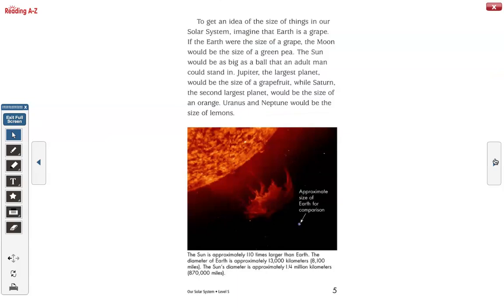To get an idea of the size of things in our solar system, imagine that Earth is a grape. If the Earth were the size of a grape, the Moon would be the size of a green pea. The Sun would be as big as a ball that an adult man could stand in. Jupiter, the largest planet, would be the size of a grapefruit, while Saturn, the second largest planet, would be the size of an orange. Uranus and Neptune would be the size of lemons.